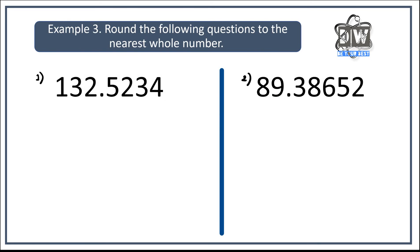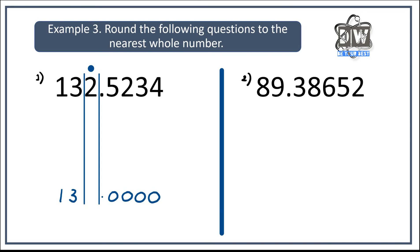Now we're working on the nearest whole number. As promised, the process stays the same — it's just the number we identify that changes. I'll do the first one so you get the idea, then you do the next ones on your own. I'm going to identify the nearest whole number, which is two, and column it. Step one: numbers before the column stay the same. Numbers after the column turn into zeros. The number in the column is going to go up by one because the digit to its right is five or more — so the answer is 133.